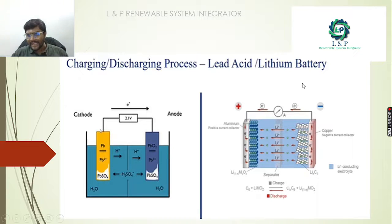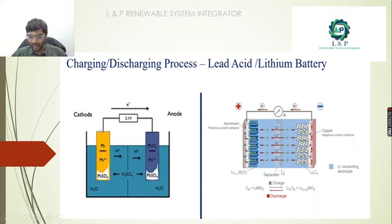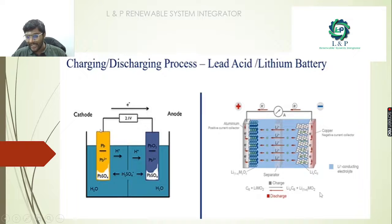For a lithium battery, the aluminum is the anode and copper is the cathode. We have an electrolyte medium that is lithium, and there are separators with pores. During the charging process, lithium manganese oxide is converted to lithium carbonate in the individual cells. During the discharging process, the same reaction happens in reverse.